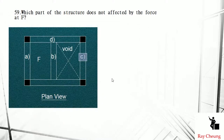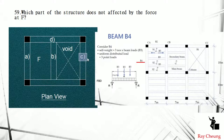This is about which member will not be affected if something changes at symbol F. You need to understand the principle of void — void means nothing is there, so there is no load. For example, C is only supported by its self-weight, and that's why it will not be affected.